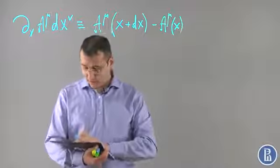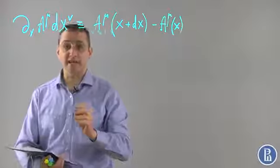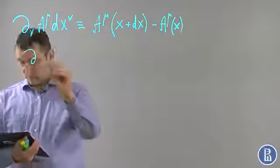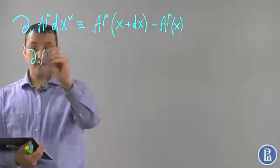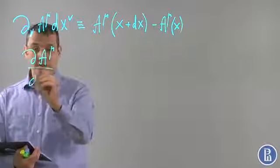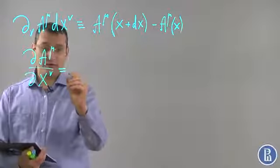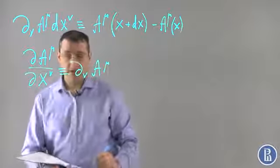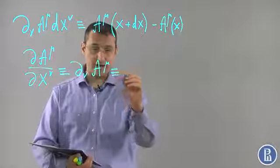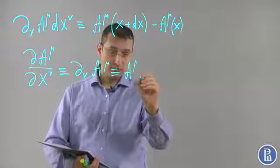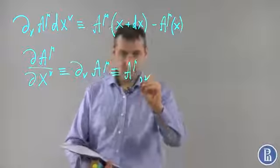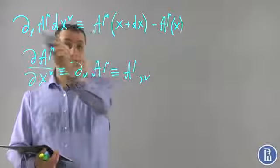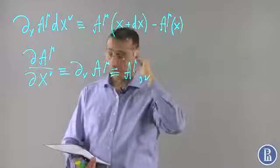I will use several different notations for the ordinary differential: d a mu over dx nu is the same as d nu a mu, and the same as a mu comma nu. So, why doesn't this quantity transform appropriately?